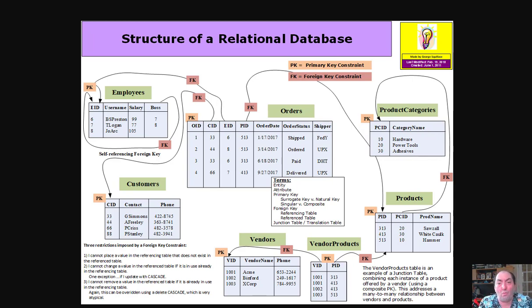Now, when you place a foreign key constraint restriction between two tables, three restrictions come along with the foreign key constraint, and we see these in the lower left of the diagram. First, I cannot place a value in the referencing table that does not already exist in the referenced table. So what does that mean? Well, focus attention for a moment on the orders table and the CID column. What if we added a new row, that is, added a new order, and attempted to add customer ID 99?